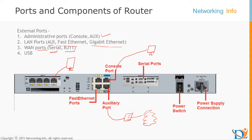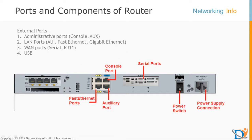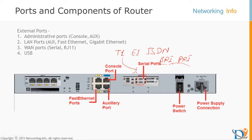For WAN ports, we commonly have serial ports and RJ11. On most routers you'll see serial ports rather than RJ11. These ports are called WAN ports and are used to connect WAN connections like T1, E1, or ISDN ports such as BRI and PRI. These are also called WAN ports and are commonly used for T1 or whatever WAN speed you get.